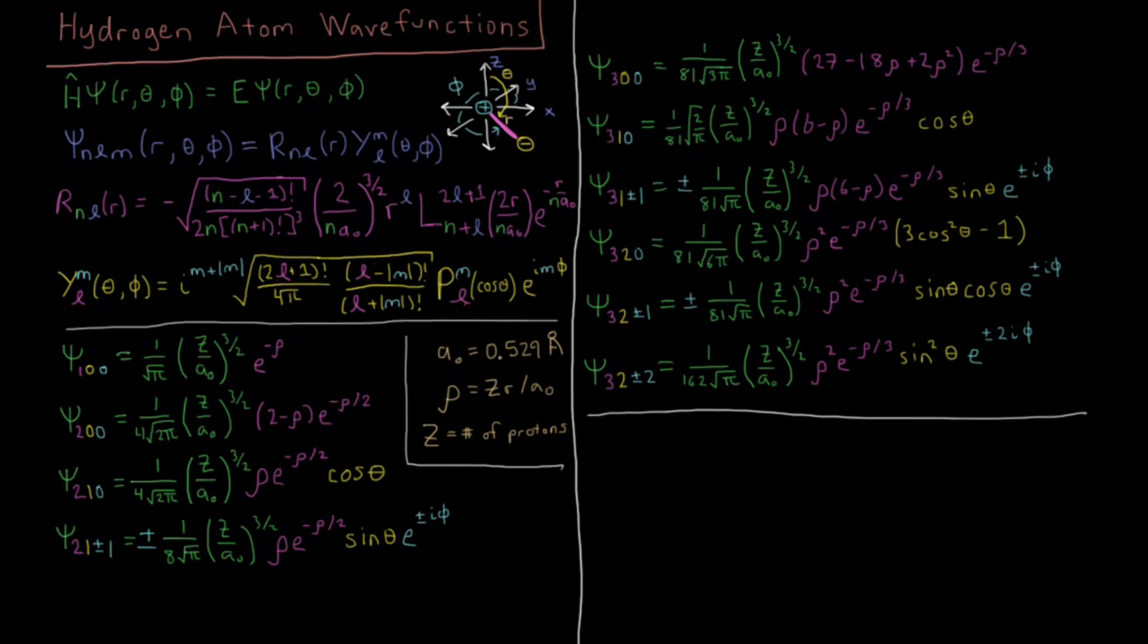Let's now look at the full wave functions for the hydrogen atom. We have our Hamiltonian H psi equals E psi. The psi is a function of three variables in spherical polar coordinates: R, the distance from an electron to a proton which is fixed at the origin; theta, a polar angle from the z-axis; and phi, an azimuthal angle in the x-y plane.